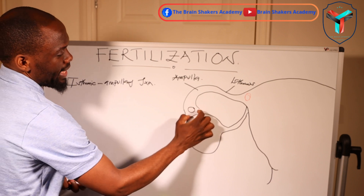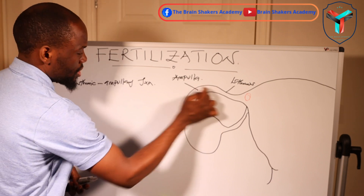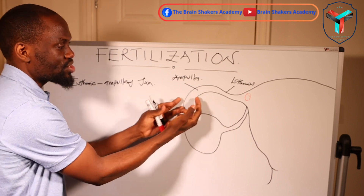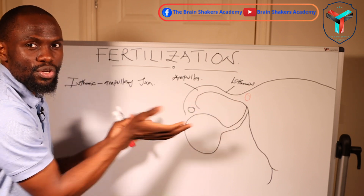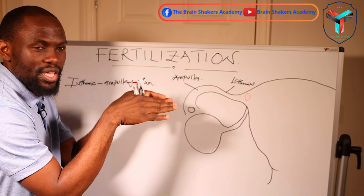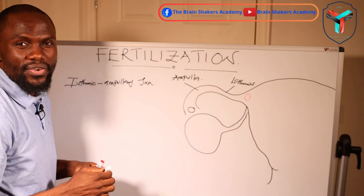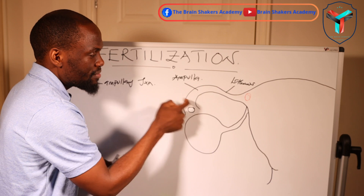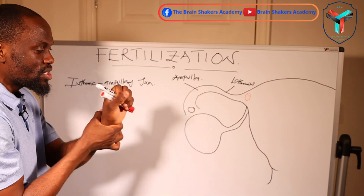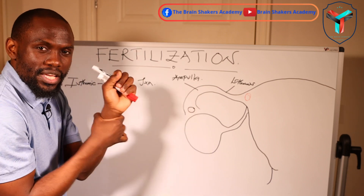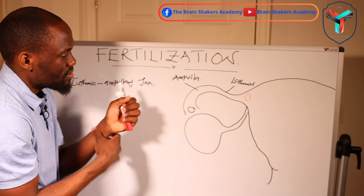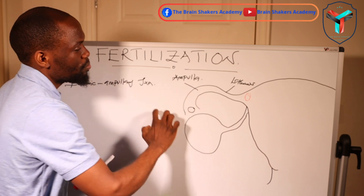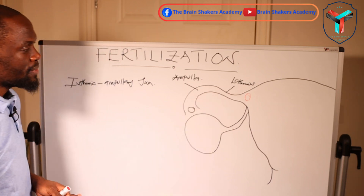The ovum is propelled to this region by cilia — hair-like structures within the fallopian tube that push the egg forward toward the area of fertilization. At the same time, the fallopian tube has circular and longitudinal muscles that also contract to push the ovum toward that area.